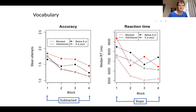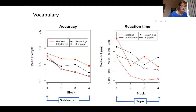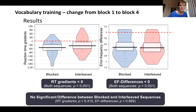Looking at the results: on the left are accuracy scores — I divided into above and below eight years, just to show that older children do better than younger, as you'd expect. The basic message is that both accuracy and the number of attempts needed go down over time on vocabulary items, and reaction time also speeds up over blocks. However, there wasn't any significant difference between the interleaved and blocked trials. We subtracted accuracy from the fourth block and the first block to see how much change there'd been, and looked at reaction time slopes computed individually for children. The bottom line is that we found learning, but no main effect of condition.